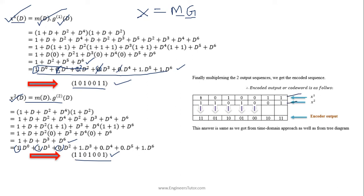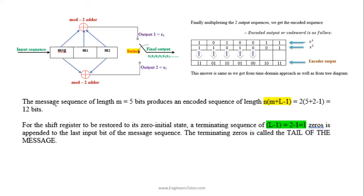Finally, we multiplex the two outputs. This is the first output and this is the second output; we combine these two outputs to get the final encoded output. This answer is the same as what we obtained from the time domain approach, as well as from the tree diagram and state diagram.